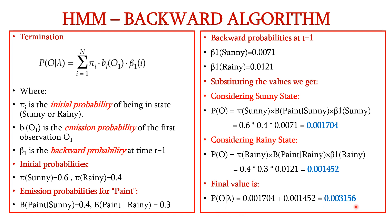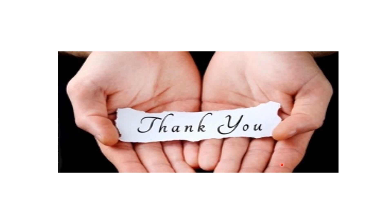So this is the probability of observing the particular observable sequence given the HMM lambda. Thus in this lecture, we have seen the backward algorithm for HMM. Thank you.